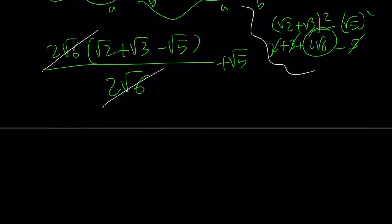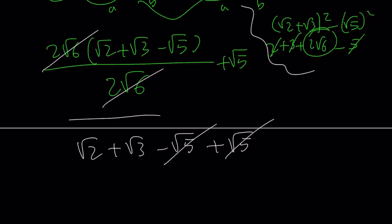They cancel out and I end up with the following: root 2 plus root 3 minus root 5 plus root 5. The negative root 5 and the positive root 5 cancel out, leaving us with root 2 plus root 3 as the answer.